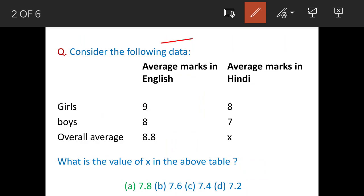Consider the following data: marks in English and marks in Hindi for girls and boys. Overall average is given as 8.8 for English and x for Hindi. We need to find the value of x. The answer is option (a) 7.8. Before seeing the solution, let's understand the question.